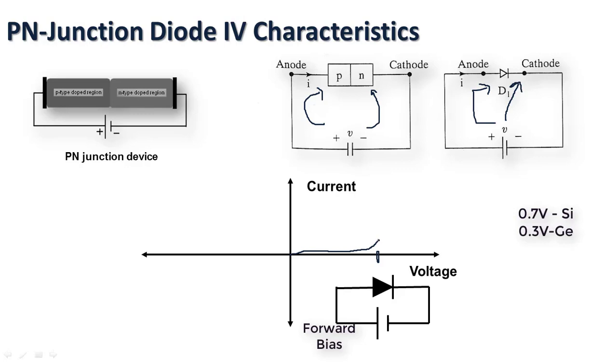When it reaches the knee voltage, there is a linear increment of the diode current for variation in the voltage across the diode.